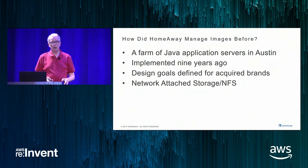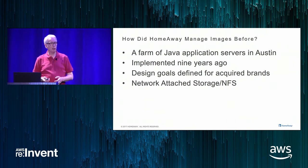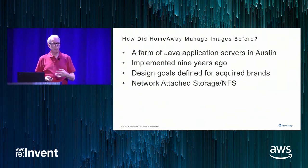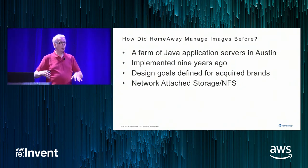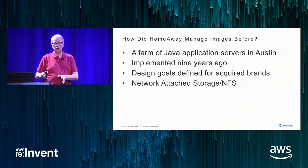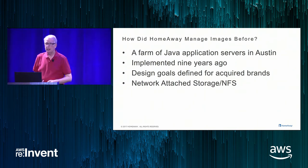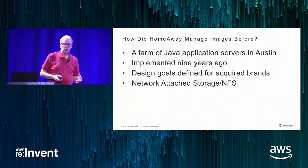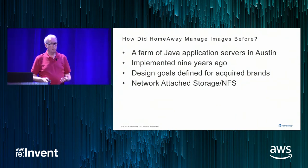In the past — and still operating today in parallel — in our Austin data center, we have a farm of Java application servers doing this image processing. They were implemented nine years ago. Our design goals then were very different: we had bought 10 or 15 companies and had to support all the image sizes they'd produced. Those companies had been in business since the late 90s and considered a 1024-wide image to be high resolution.